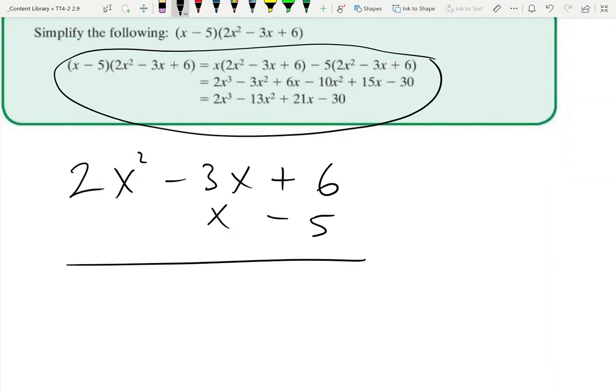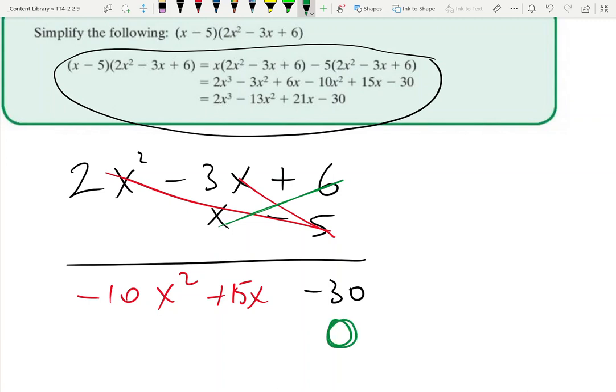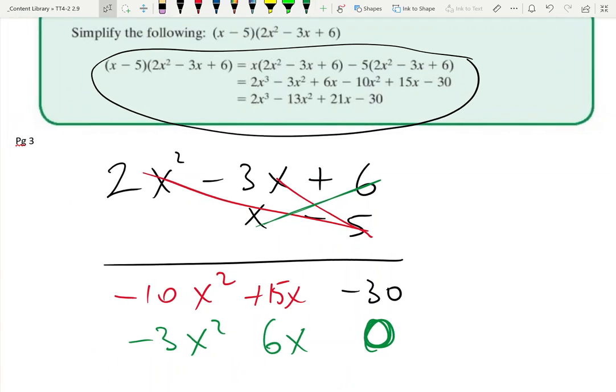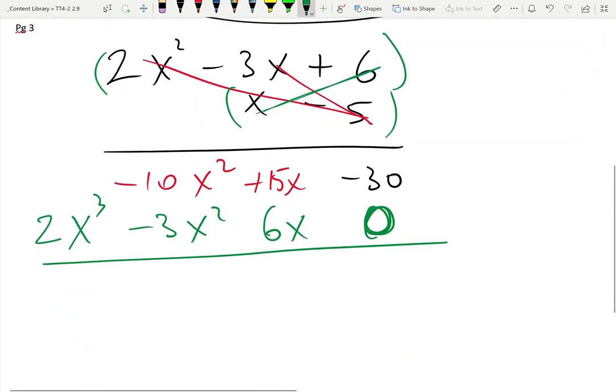So you've minus 5 by 6 is minus 30, then you have this which is plus 15x, then you have this which is minus 10x squared. Now we don't have any units for this multiplication because it's an x, so you put a zero here, and you have 6x, and then you minus 3x squared. Finally, you have a unit, you have an x cubed term that didn't appear at the beginning in either of the number expressions being multiplied, and you're getting 2x cubed.